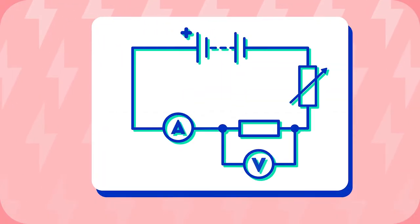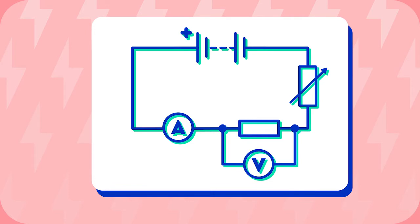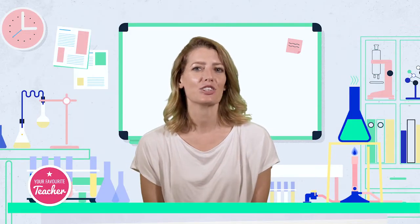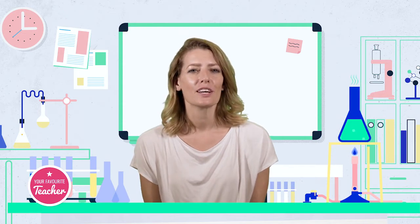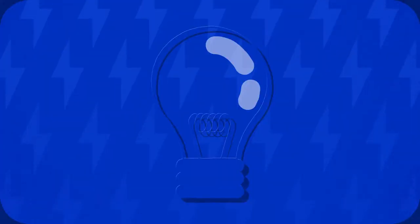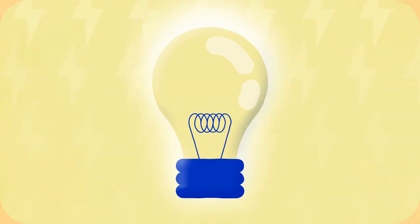Circuit diagrams are used in physics to show us how electrical components should be arranged in circuits. You should be able to make a circuit using a circuit diagram, and by the end of the topic you should be able to look at a circuit diagram and predict what will happen when the circuit is turned on.